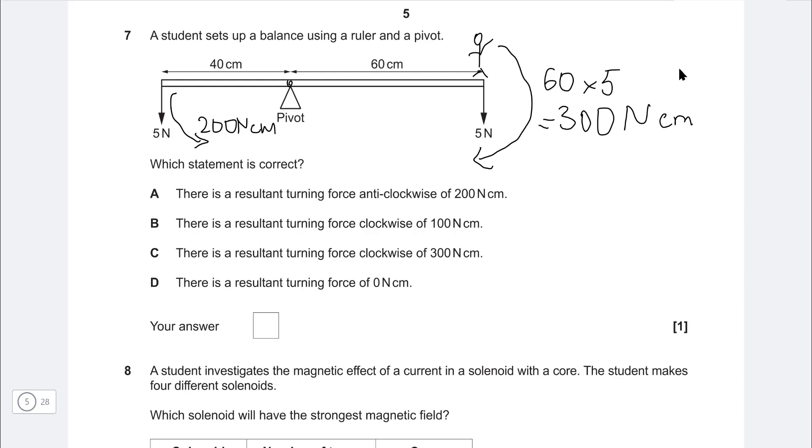So now the resultant moment that is acting, the resultant turning force, because they're going in opposite directions, will be 300 take away 200, which is just 100. So correct answer is B.